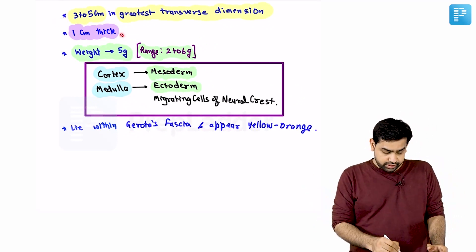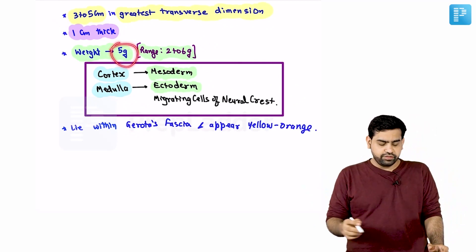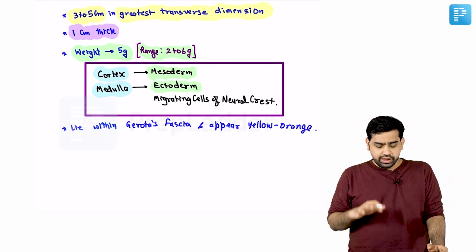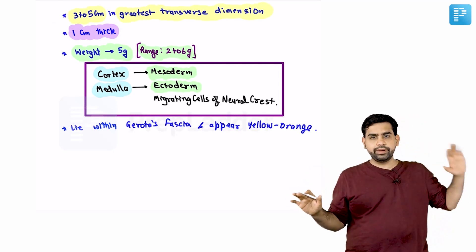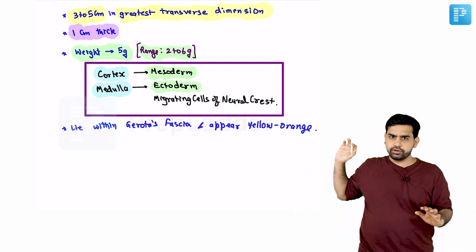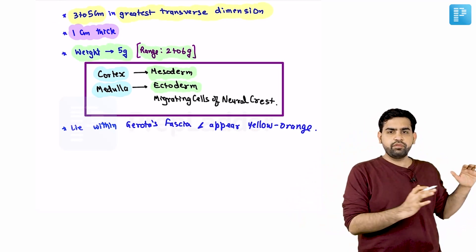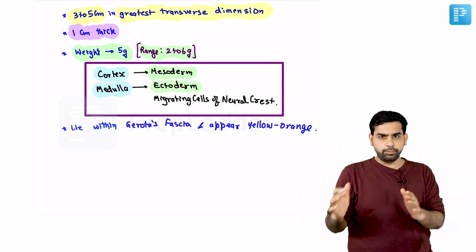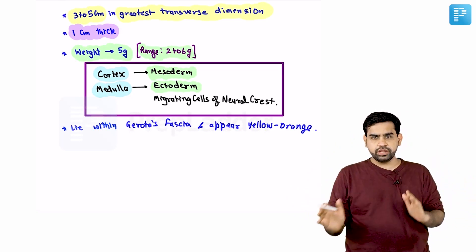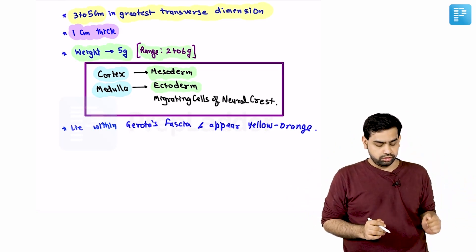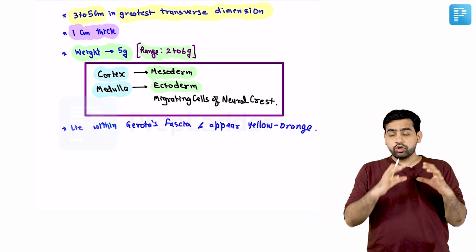The adrenal gland is around three to five centimeters in the greatest dimension, one centimeter thick, and weighs around five to six grams. This weight is basically the same in males and females. Unlike the kidney, whose size is around 10 to 15 grams smaller in females compared to males, there is no such discrepancy between males and females as far as the adrenal gland is concerned.